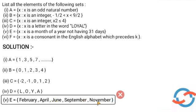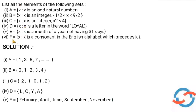Last question. F is equal to the set of all x such that x is a consonant in the English alphabet which precedes K. Starting from A to before K: A is a vowel, not an element. B is a consonant, so it's an element.